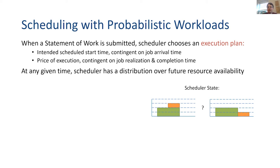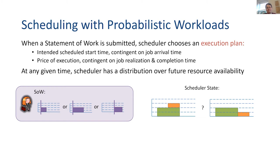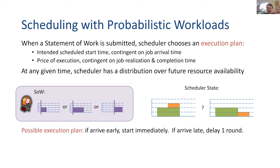The scheduler is making decisions that are probabilistic, so in particular the scheduler doesn't even really know exactly what it's promised to different jobs. When the scheduler is internally trying to decide what's available in the future, it just has a distribution over what's available. For example, maybe the scheduler has said: there's this orange job, I don't know when it arrives, but I promise them I'll start them whenever they come in. Then I have a distribution — maybe what I've promised is the thing on the left and maybe it's the thing on the right. Then a new statement of work comes in and we have to make a decision about what to promise.